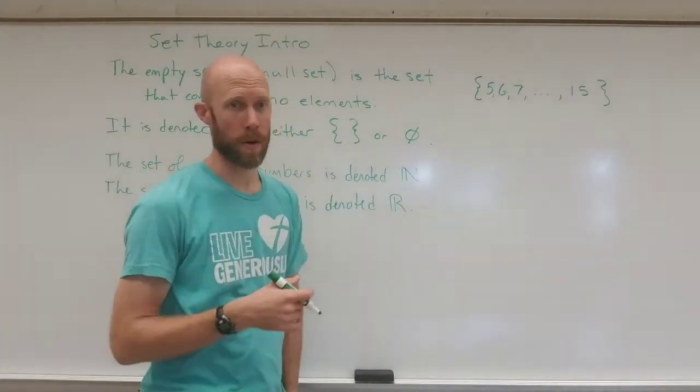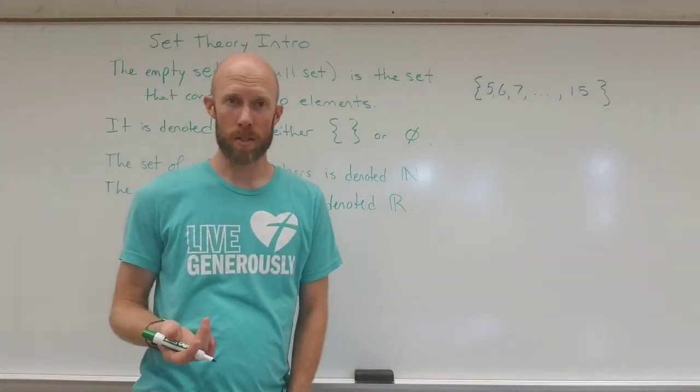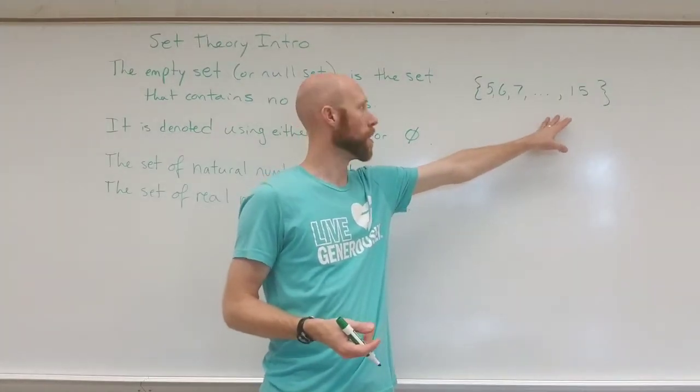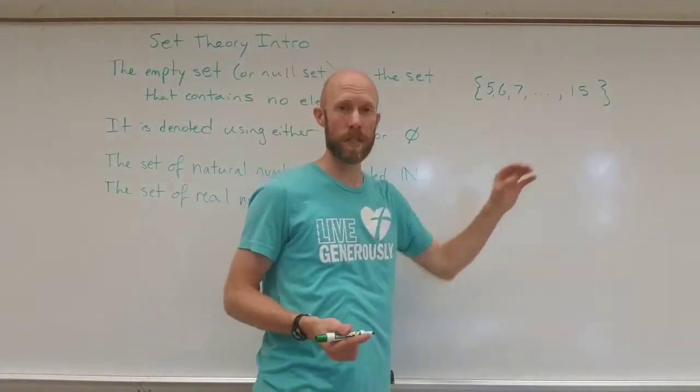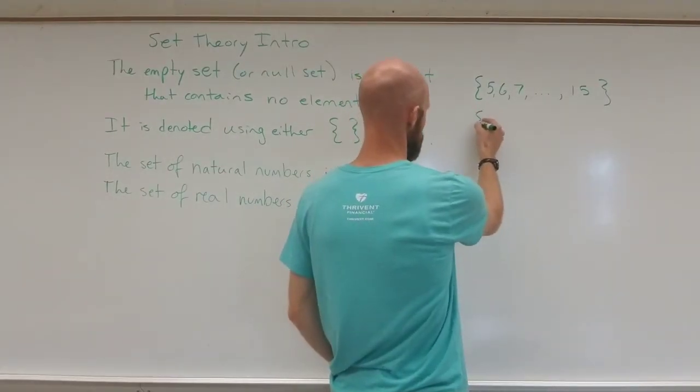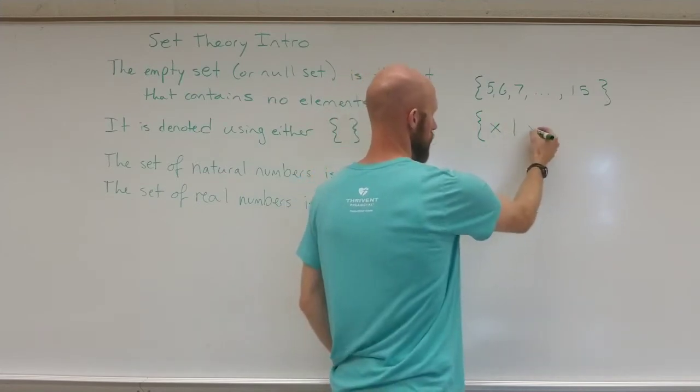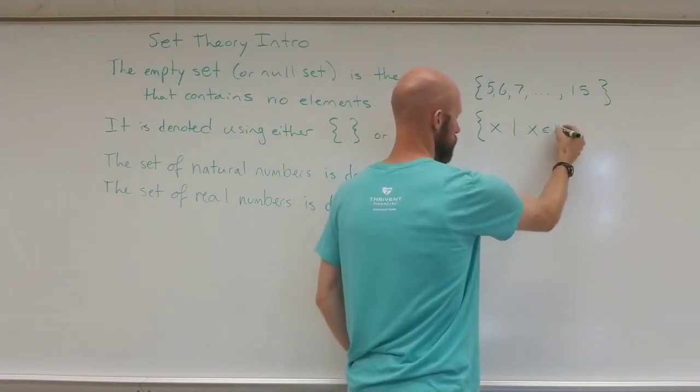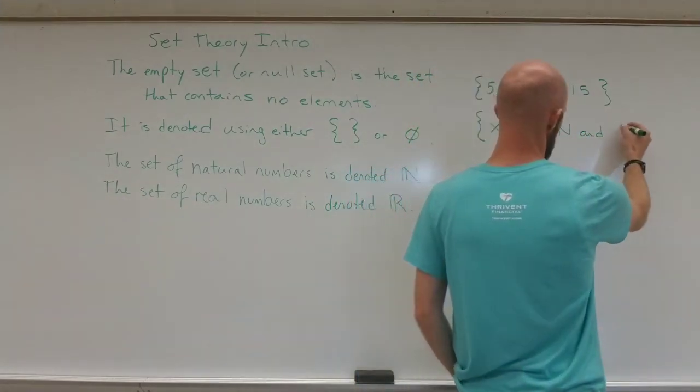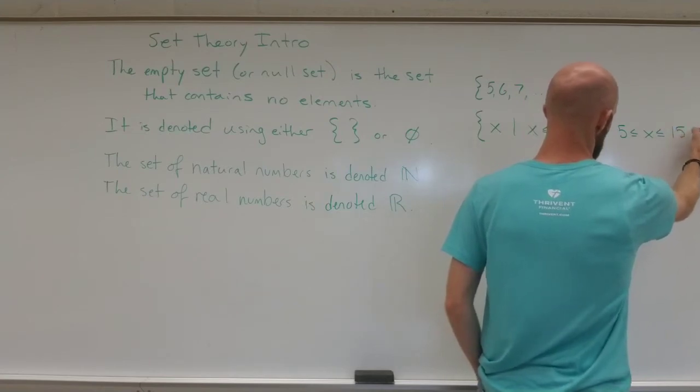Or I could list them all off if I wanted to. Or I could use set builder notation. And each of these numbers is a natural number and it's also between 5 and 15 inclusive of the end points. And so in set builder form I might say x such that x is an element of the natural numbers and 5 is less than or equal to x which is less than or equal to 15.